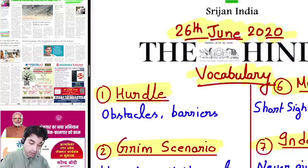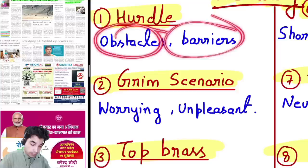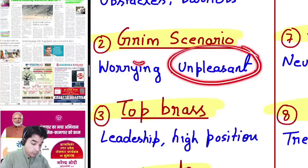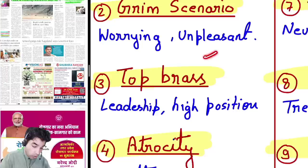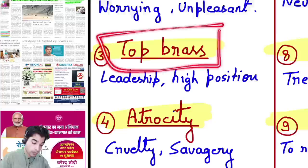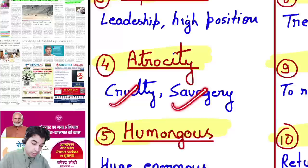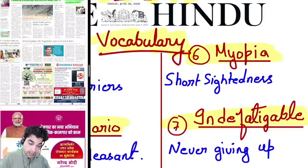Let us begin with vocabulary. First word: 'hurdle' means obstacles or barriers. 'Grim scenario' means the situation is not looking good — unpleasant and worrying things. 'Top brass' refers to the top-level people in any organization — those in decision-making, leadership, and high positions. 'Atrocity' means cruelty and savagery.